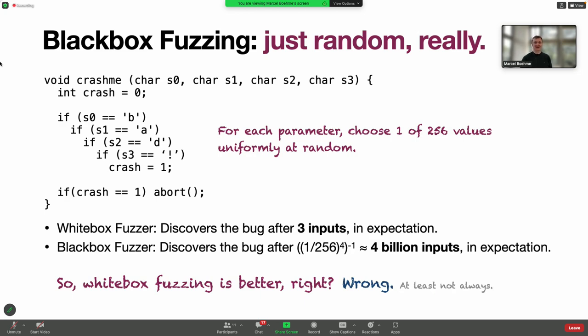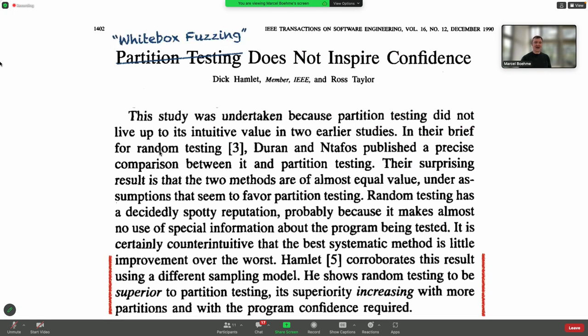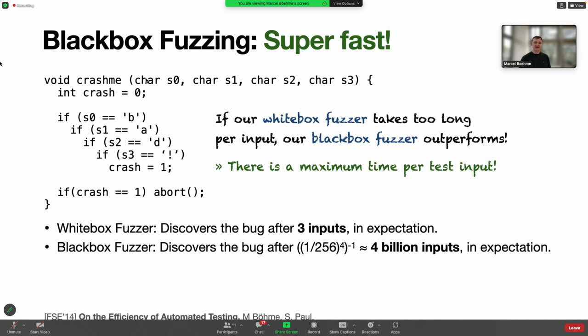Not always. Sometimes black box fuzzing wins. This was discovered 30-40 years ago when people started doing experiments with these two techniques. Somehow they found that given some limited time, this very simple, very dumb technique wins and finds more bugs than the most effective technique. We looked at this recently from a statistical perspective and found that if a white box fuzzer takes too long per input, the black box fuzzer outperforms because it generates inputs very fast.